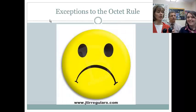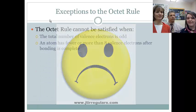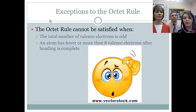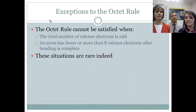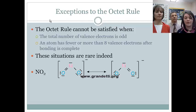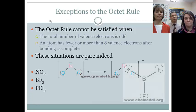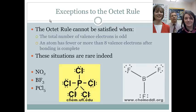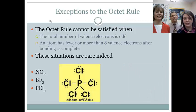There are some exceptions to the octet rule. So, we can't satisfy that eight valence electrons when we have a total number of valence electrons for our molecular compound that's going to be odd. Or if the atom has fewer or more than eight valence electrons after bonding is complete. So, they're very rare. And we've got a couple examples for you here, which you can see right there. NO2, BF3, and also phosphorus and 5-chlorines there.